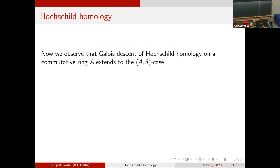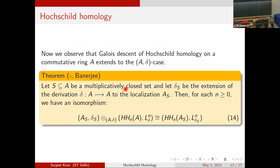We prove a Galois descent result on the Hochschild homology groups. Suppose you have a multiplicatively closed set S and delta_S is the extension of the derivation to the localization A_S. Then for each n, the localization of HH_n(A) — tensored in the A-delta-mod category — equals the Hochschild homology group of A_S with respect to delta_S.